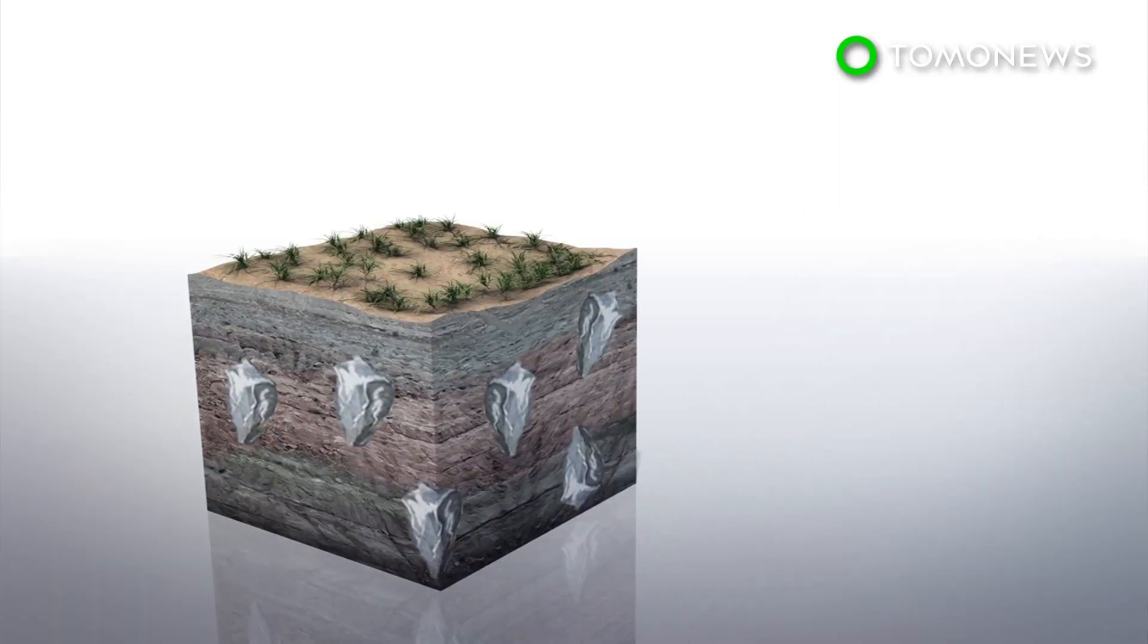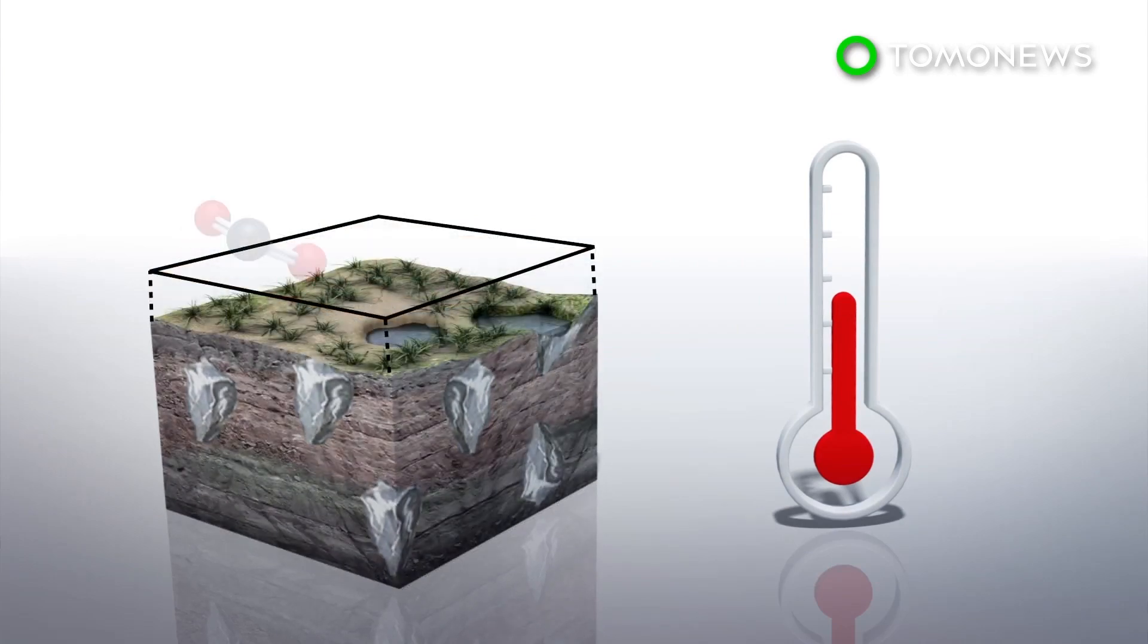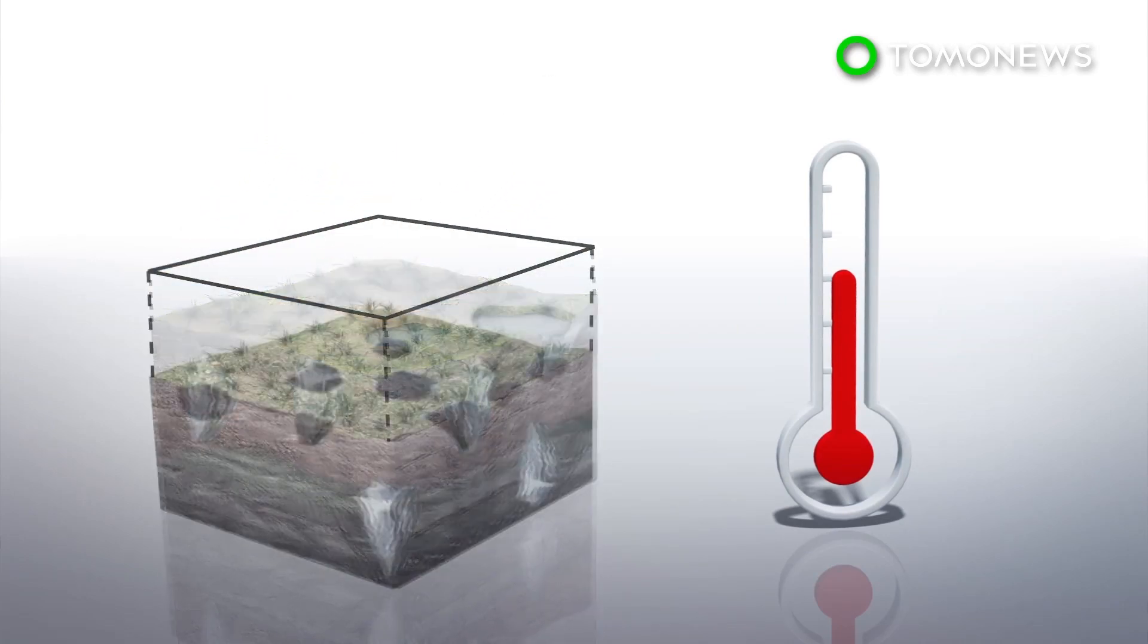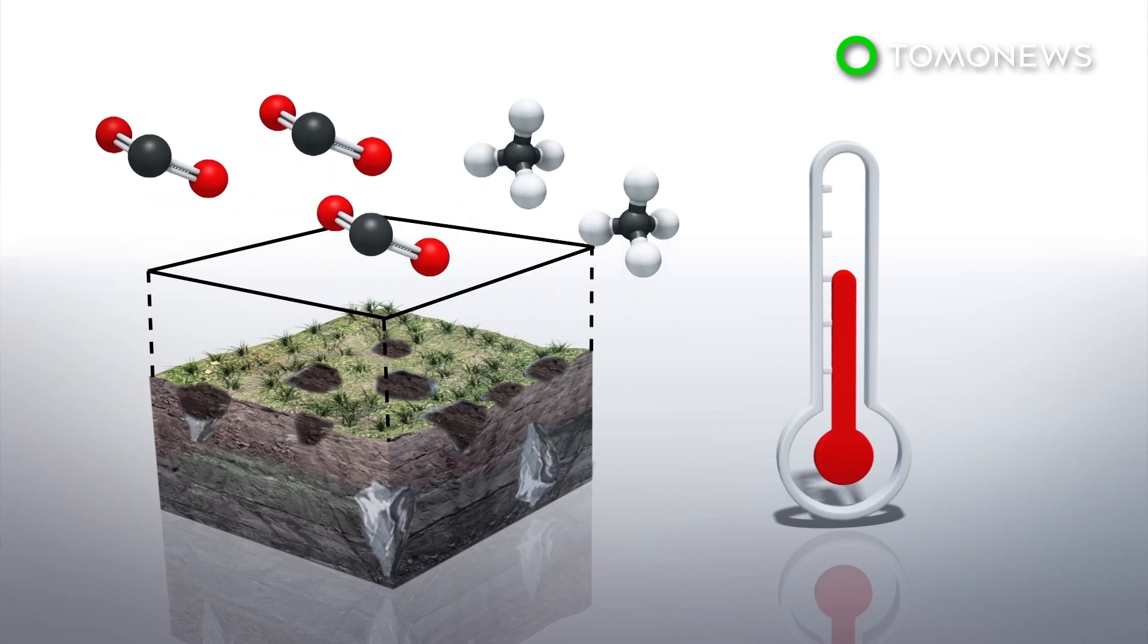Due to increasing temperatures from global warming, ground that used to be permafrost in the Arctic is now thawing and releasing trapped greenhouse gases into the air, thereby accelerating climate change.